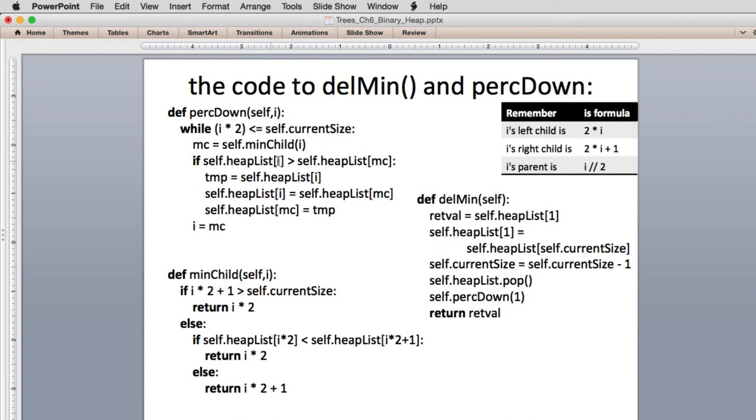And then if it needs to go down further, it swaps with that child. And then sets i to the index number which child is swapped for, because that's where it is now. So then it continues swapping down in the list until it's in the proper place.